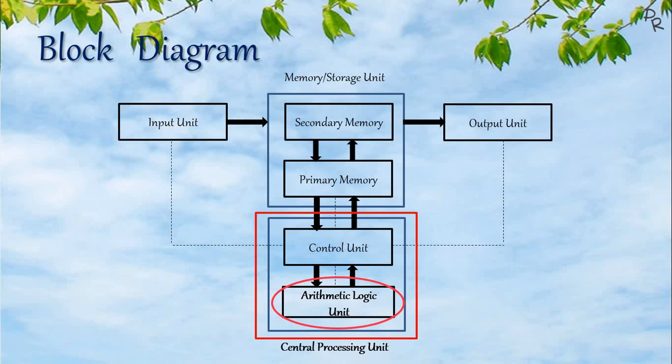The actual processing or calculation is done by the arithmetic logic unit — it performs arithmetic and logic calculations. The CPU uses data which is stored in the primary memory, so for processing, if the data is not in primary memory it will be loaded there first, and then transferred to the CPU for processing.